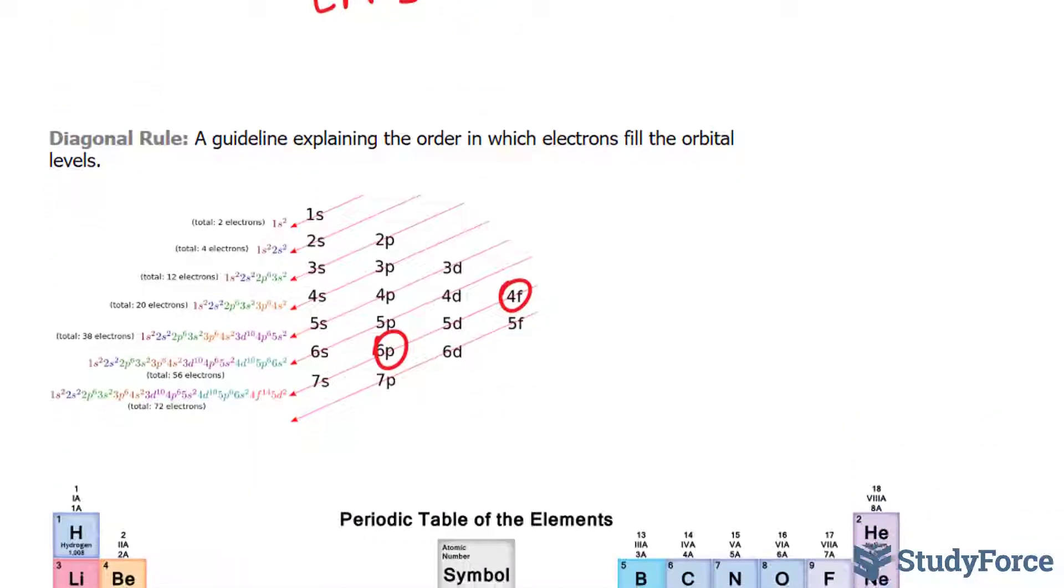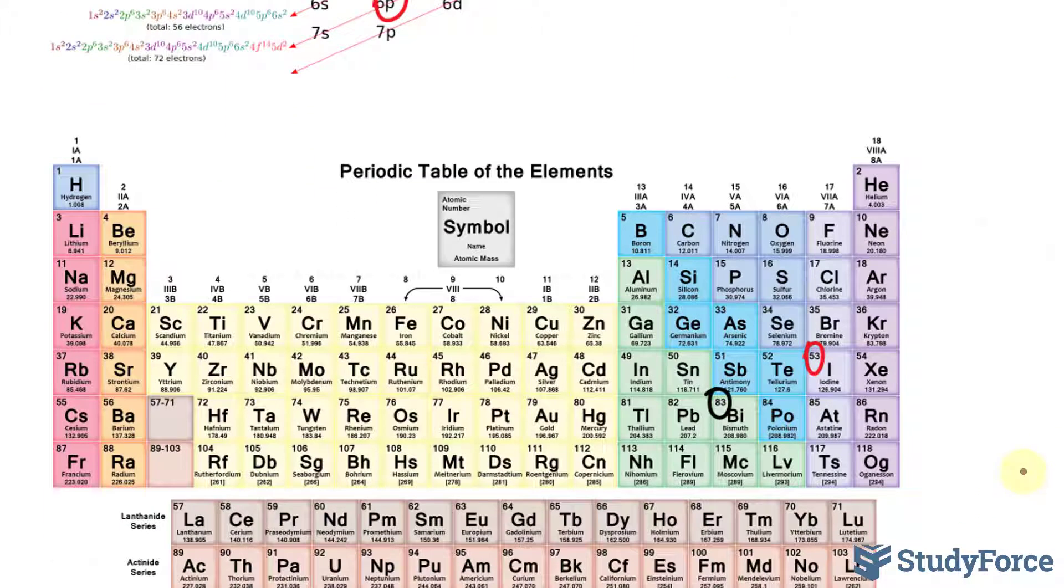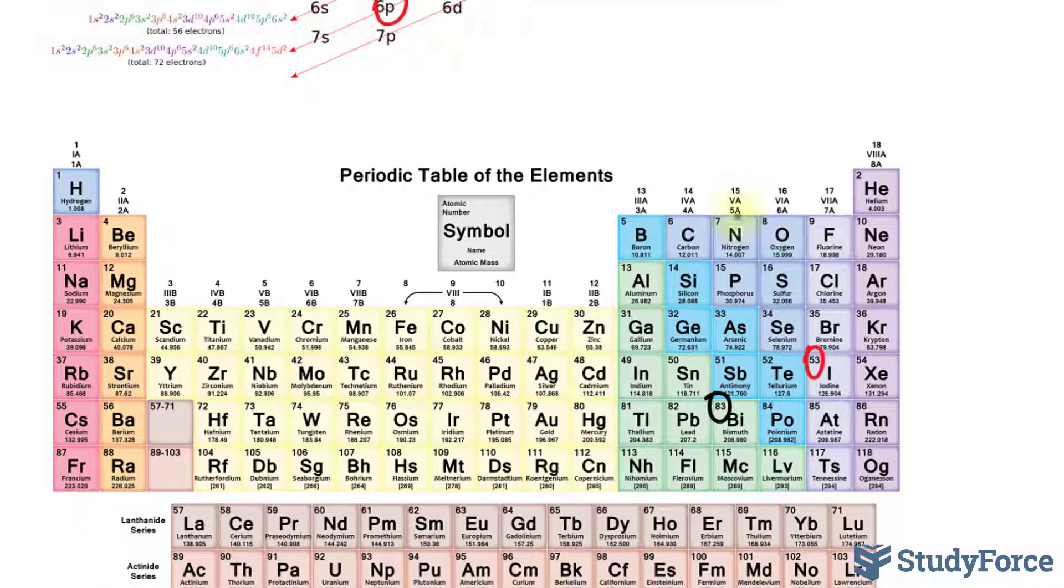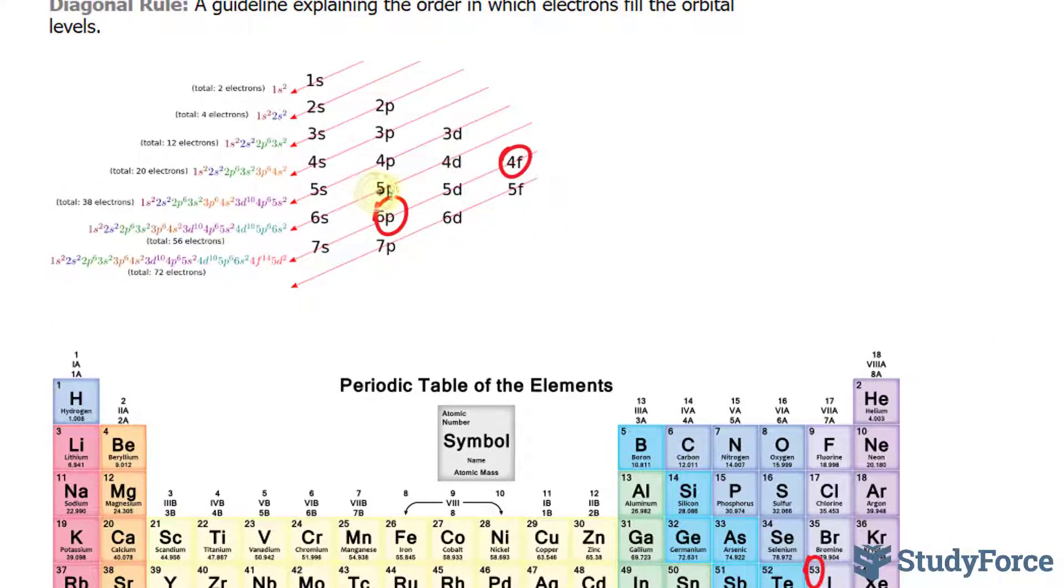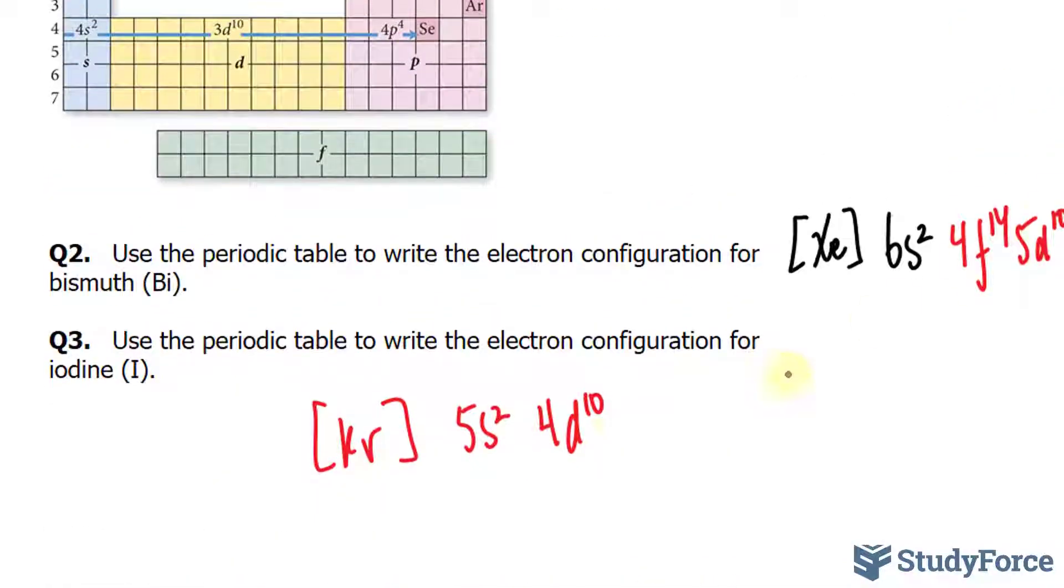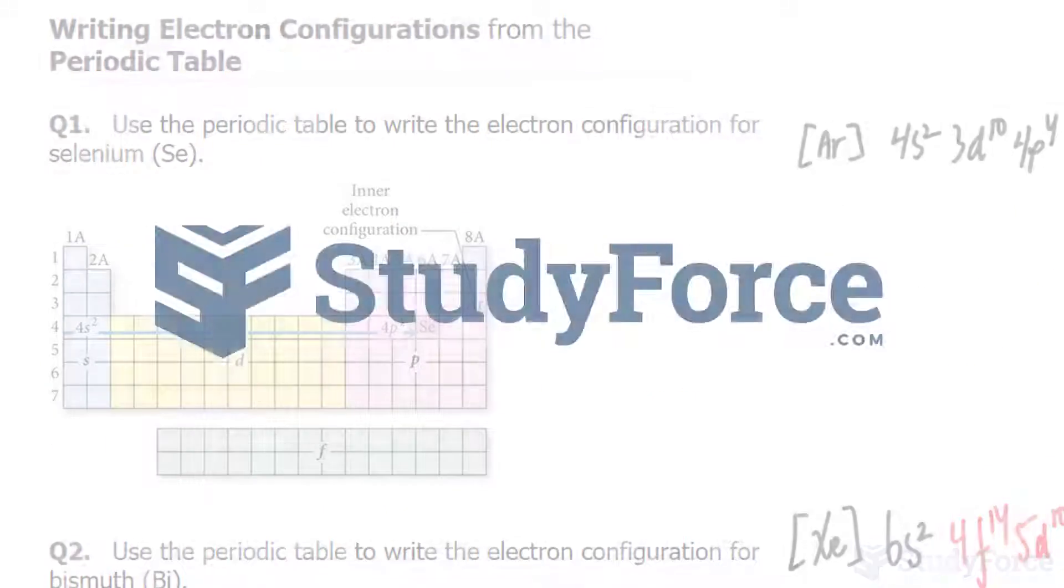Taking a look at the diagonal rule, after 5S comes 4D, and that's what we expect. Let's write down 4D10. Since our element is over here, after 4D comes 5P. Counting over: 5P5. And there you have it—that is how to write the electron configurations using the periodic table.